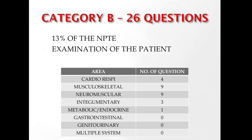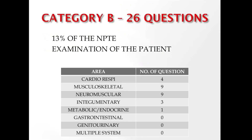Category B is examination of patients in pediatric and adult populations — strictly the examination part only. A total of 26 questions are asked, representing 13% of NPTE questions. It covers tests and measures and their applications, information collected during system reviews and history, kinesiology, kinematics, and movement analysis. Subcategory breakdown: cardio 4 questions, musculoskeletal 9, neuromuscular 9, integumentary 3, metabolic or endocrine 1.